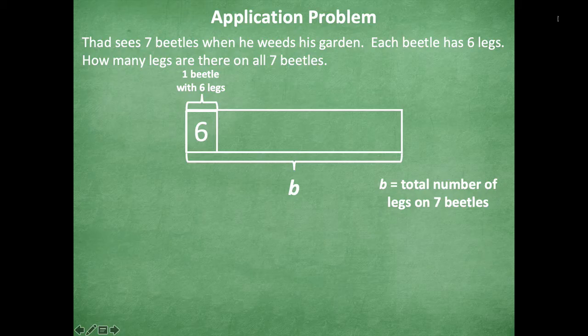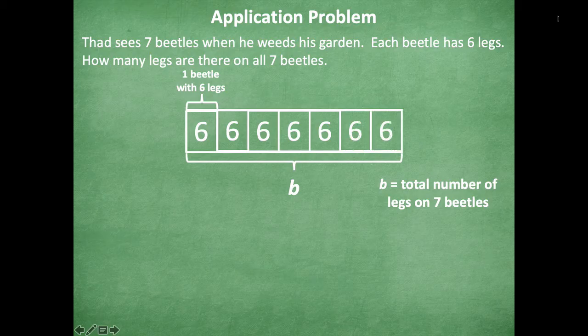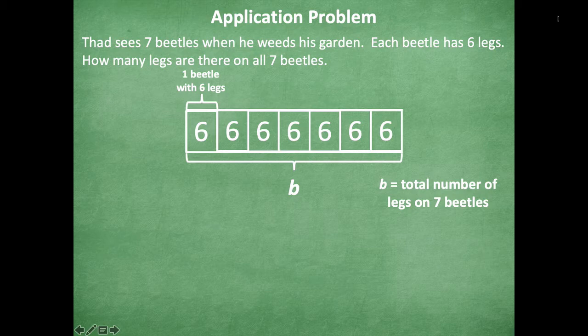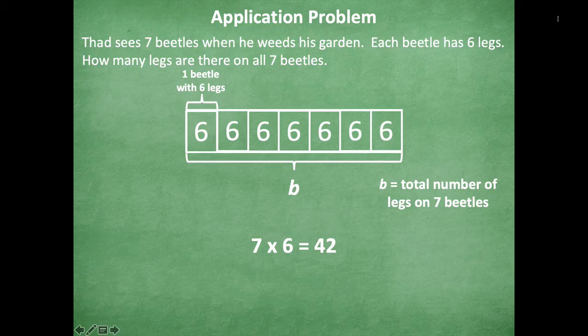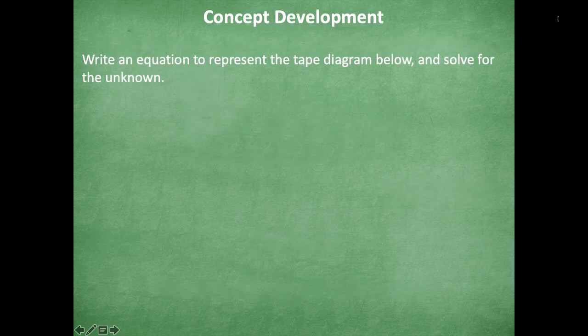So I'm going to skip count until I get to seven beetles. I'm going to put seven beetles on here: one, two, three, four, five, six, seven. And then I can skip count by sixes until I get all seven, and that is 42. So seven times six equals 42, B equals 42. So there are 42 legs on seven beetles.